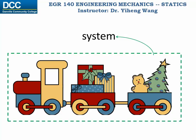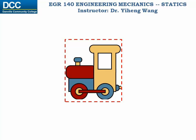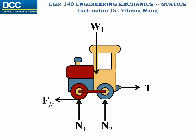Depending on how you define your system, the free body diagrams should be sketched differently. For example, if you only choose the train engine to be your system, then on the free body diagram you should include the weight, the normal supporting forces, the frictional force, and the force between the engine and the train car.